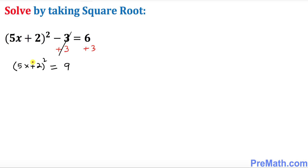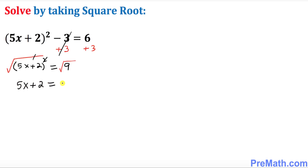The next thing we want to do is get rid of this square by taking the square root on both sides. The square and square root undo each other, so we get 5x plus 2 equals positive or negative square root of 9, which is 3.